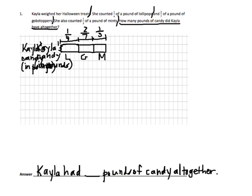Now we are asked: how many pounds of candy does Kayla have altogether? This is Kayla's candy, so that means I'm starting here and ending here. That means I'm putting together one-fourth with two-sevenths with one-third. Let me draw my length marker — we're trying to figure out from here to here; that is the question. So what we're going to do is add up these fractions. Let's start off with an equivalent statement: one-fourth plus two-sevenths plus one-third equals...